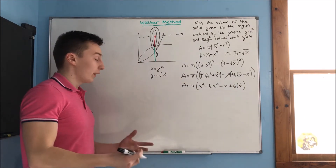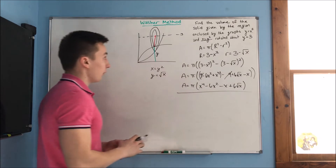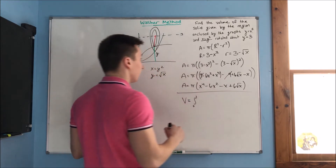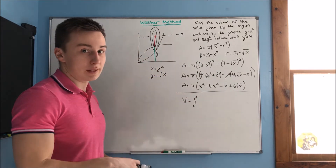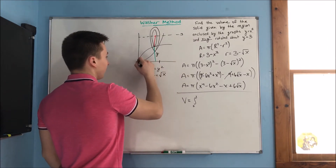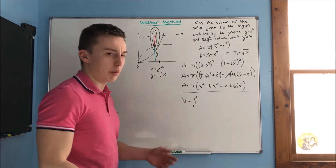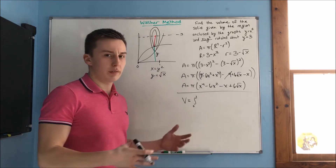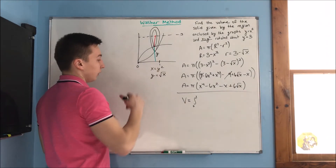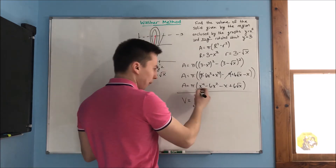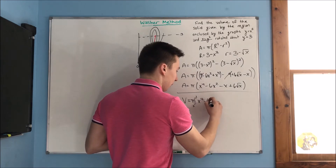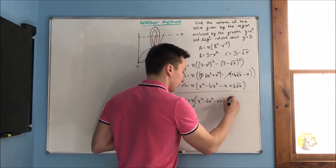We found our area, now let's find our volume. Our volume is going to be the integral from 0 to 1 — the bounds are still 0 to 1. We pull that pi out of the integral and get the integral of x to the 4th minus 6x squared minus x plus 6 root x, dx.